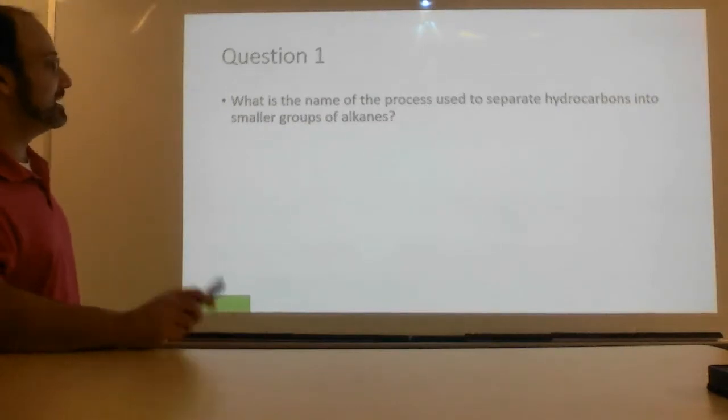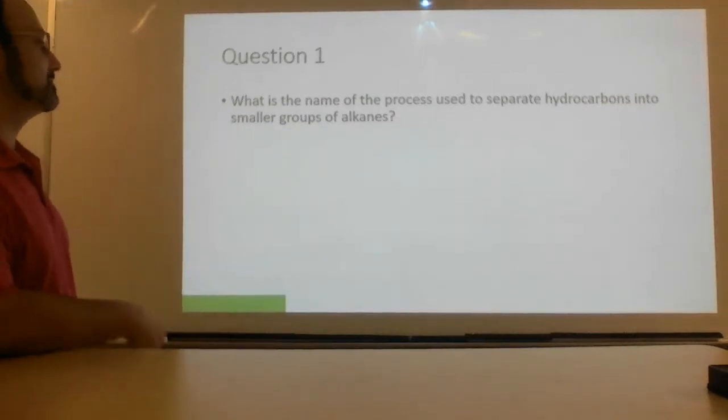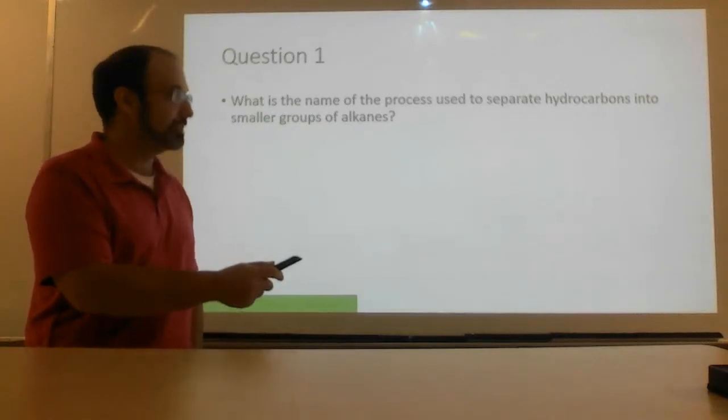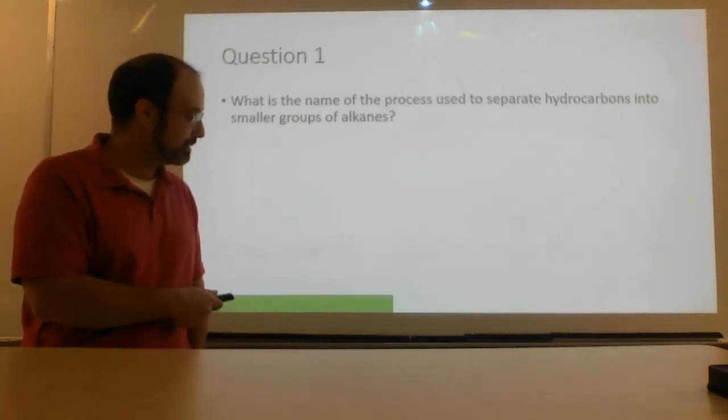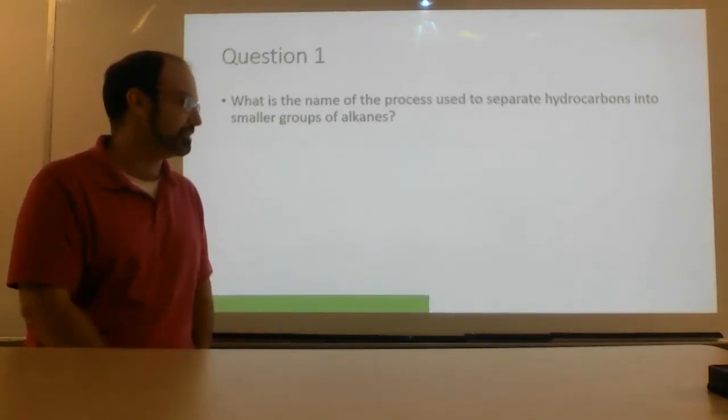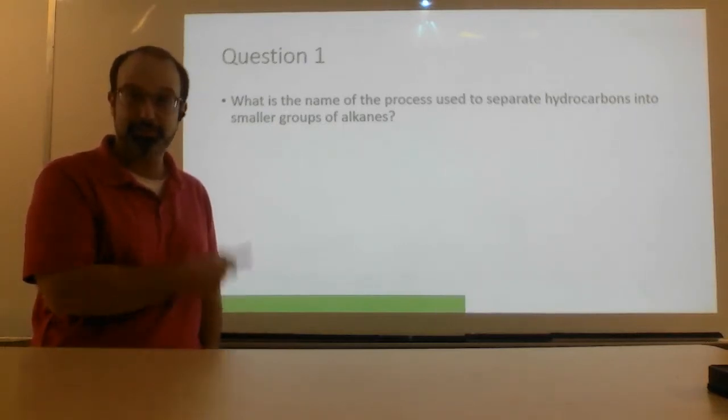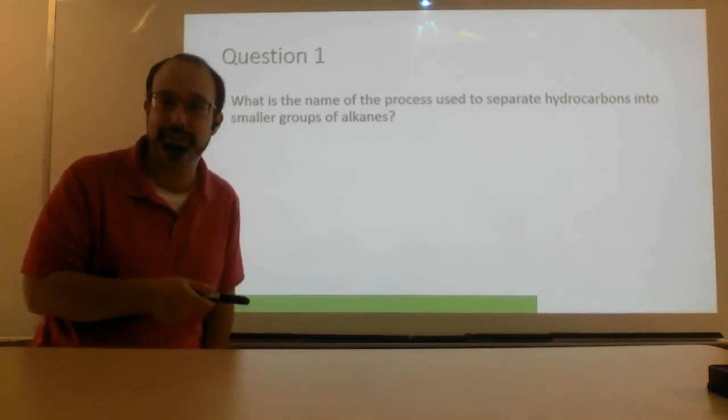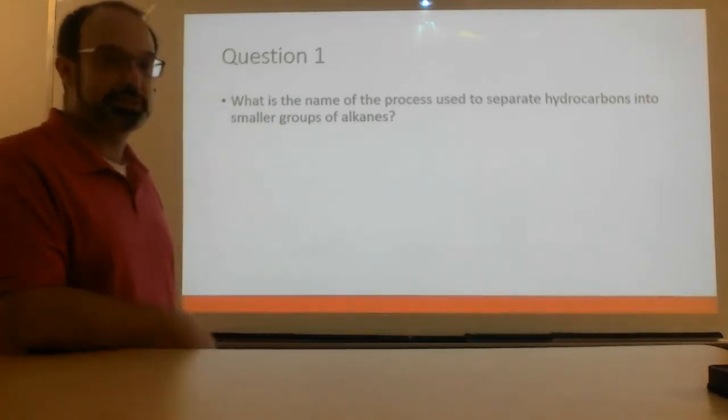Kevlar is a polymer made of many, many layers of cloth. That's pretty impressive. Okay, there's your question. Go. What is the name of the process used to separate hydrocarbons into smaller groups of alkanes? It's timing. Look at that. You've already wasted a quarter of the time just reading this.